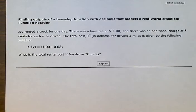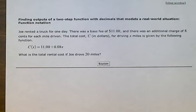Finding Outputs of a Two-Step Function with Decimals that Models a Real-World Situation: Function Notation. Joe rented a truck for one day. There was a base fee of $11, and there was an additional charge of $0.08 for each mile driven. The total cost, C in dollars, for driving x miles is given by the following function: C of x equals 11 plus .08x. What is the total rental cost if Joe drove 20 miles?